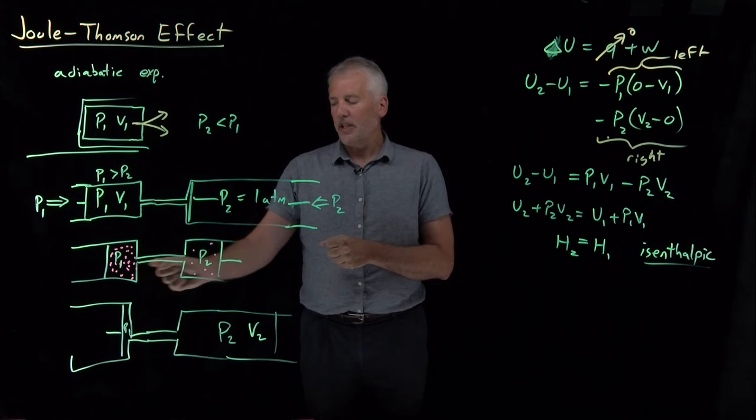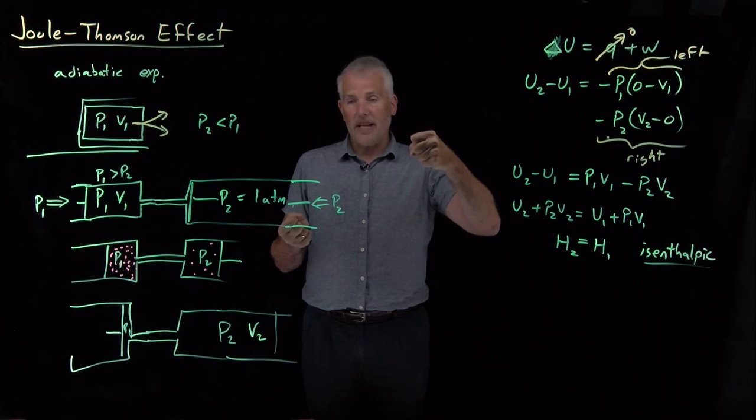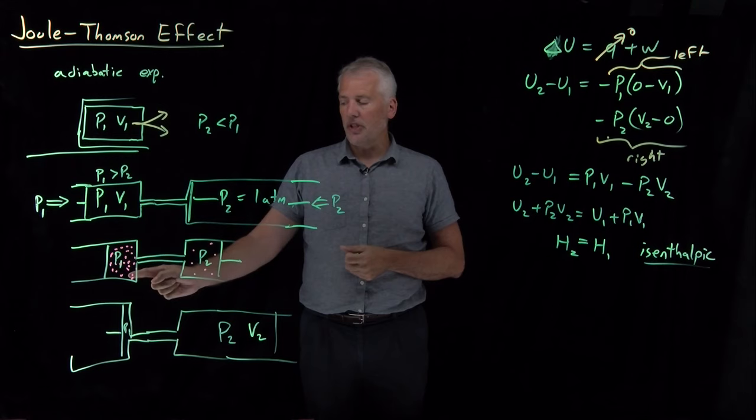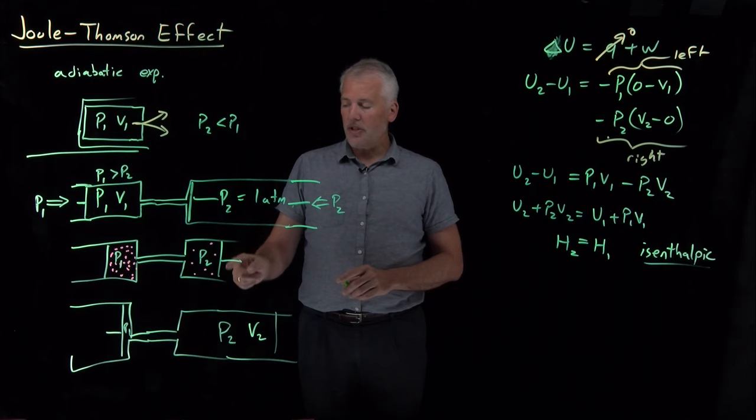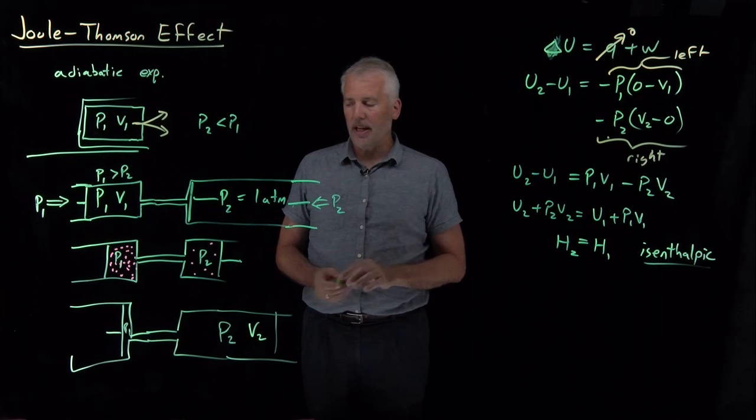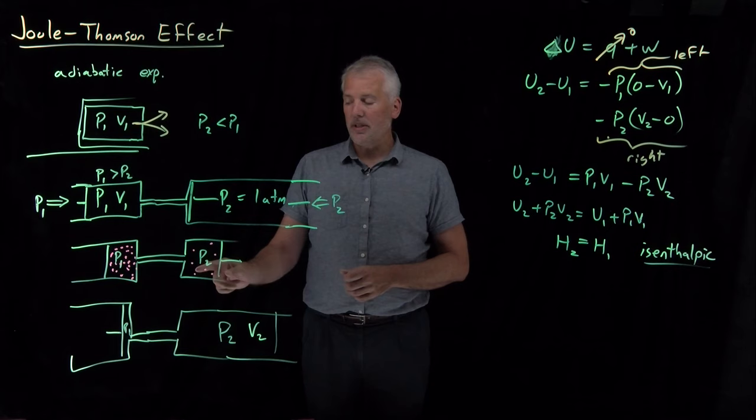So molecules that are close together are attracting each other have some favorable negative potential energy. If I expand the gas and make those molecules get further apart, then I've had to move against that attraction. I've had to put some energy in to increase their potential energy, so their potential energy goes up as I do that expansion. So the reason that this process cools the gas down for a real gas is because that potential energy increase is associated with a kinetic energy decrease. If I've done the process adiabatically and I can't pay for that increase in potential energy with heat, then it has to come from a decrease in the kinetic energy which cools the gas down.